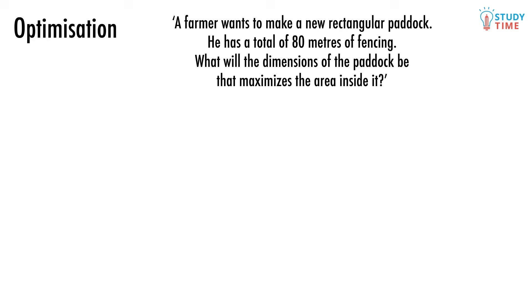On the surface it doesn't look like we've been given enough information to really do anything. For example, where's the equation that we'll be needing to differentiate? Well, let's draw a diagram to make things more obvious. We know that the paddock is going to be a rectangle shape, so let's make a basic image to get us started.